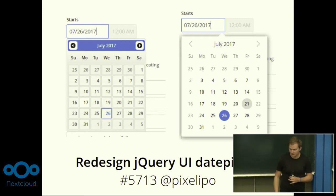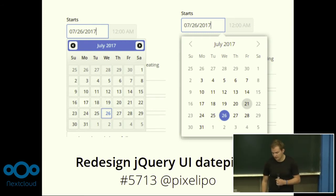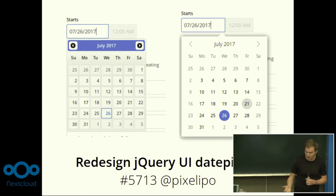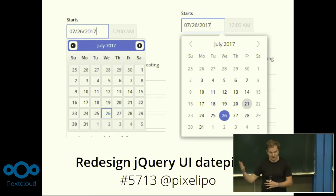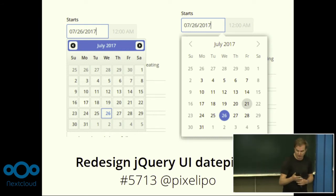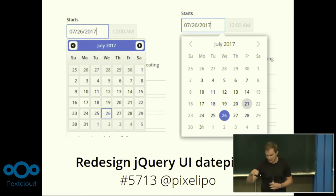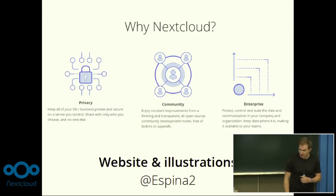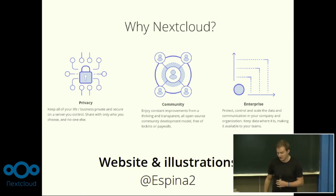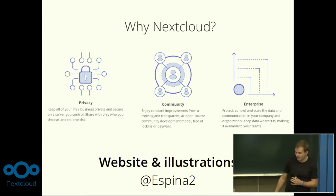Another very recent thing, not even in Nextcloud 12 yet, is made by Marin — redesigning the jQuery UI date picker. I made a mockup of how it should look, and he very quickly implemented it. It is now across all apps that use the date picker: the Deck app, the Calendar app, and the Files app for expiration dates. It's a pretty impressive change from the old jQuery UI style to a nice Nextcloud style. And of course thanks to Paolo, who designed the whole website and does awesome illustrations and animations.